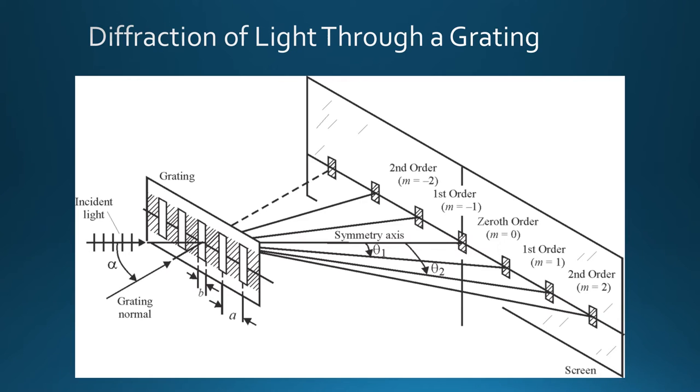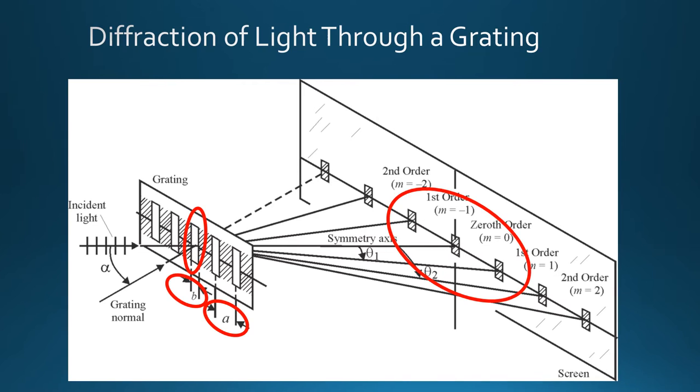This is our first figure showing the interference pattern through a diffraction grating. Each one of these circles represents what we talked about before.